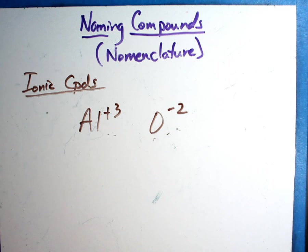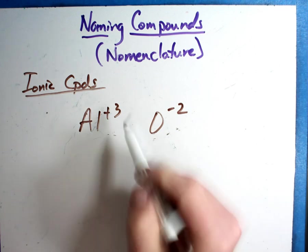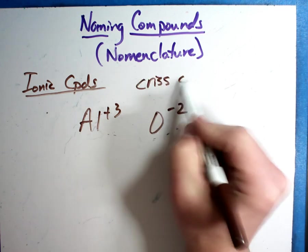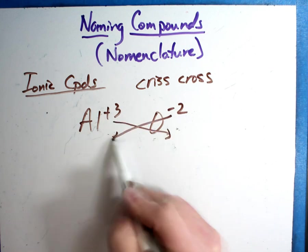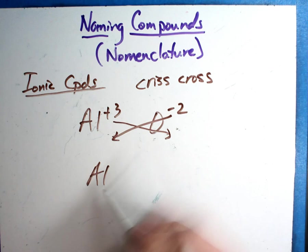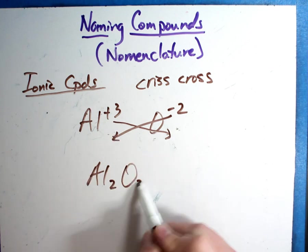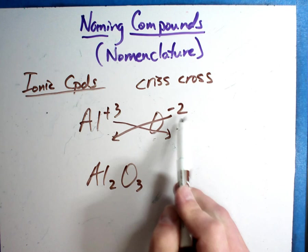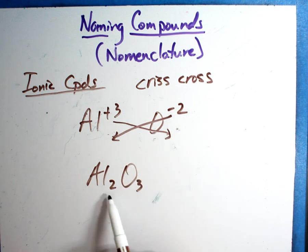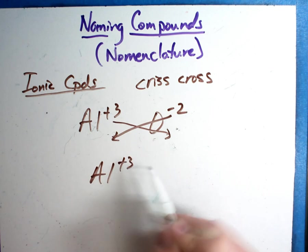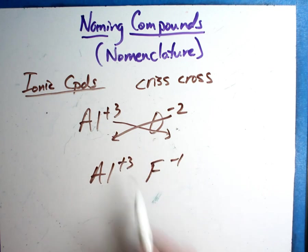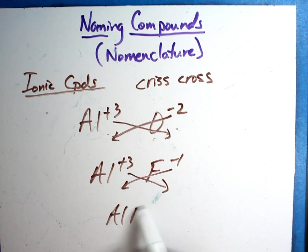Here's what happens when they don't equal zero. This is what is called the criss-cross method to make your life easier. If they don't equal zero, put that number there and that number there and you got your answer. Al two, O three. How does that work? Well, if they both go into six, that's exactly what we just had. Did that work with all of them? Well, the one right before we had Al plus three and F minus one. They don't equal zero. So if I do that, I get AlF3. And if you look back, that's exactly the formula. That's a quick way of doing.